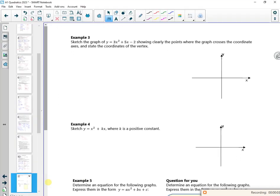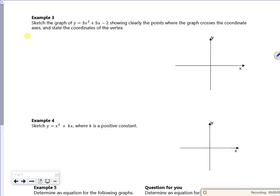Alright everyone, let's have a look at example three. Example three says sketch the graph of y = 3x² + 5x - 2, showing clearly where it crosses the coordinate axes and state the coordinates of the vertex. Because A is greater than zero, because it's a three, I know it's going to be a U shape.